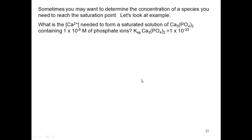Sometimes you want to determine the concentration of a species needed to reach the saturation point. I know how much of one ion I have, and I want to know how much of the second one I can add before I reach that saturation point and form a precipitate. Let's look at the following example: What is the concentration of calcium needed to form a saturated solution of calcium phosphate containing 1×10⁻⁵ molarity of phosphate ions?